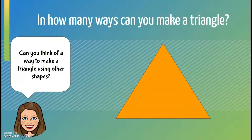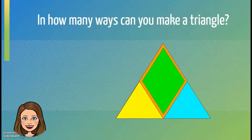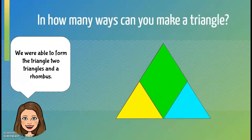Can you think of a way to make a triangle using other shapes? There's a triangle, another triangle, and a rhombus. We were able to form a triangle using two triangles and a rhombus.